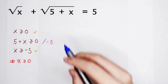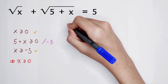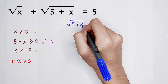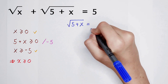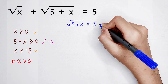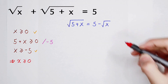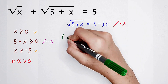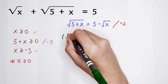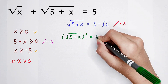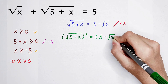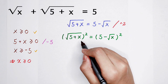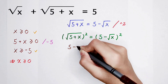So now we do some changes. On the left side, I place square root of (5 plus x), and I move square root of x to the right side, giving us 5 minus square root of x. Then we square both sides: square root of (5 plus x) all squared equals (5 minus square root of x) all squared. The left side simplifies to 5 plus x, since squaring a square root of a non-negative number gives itself.